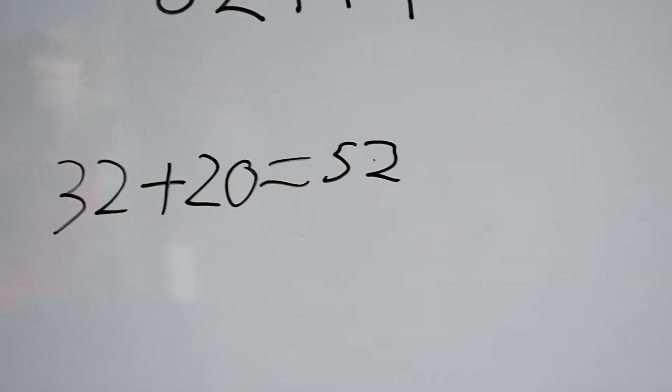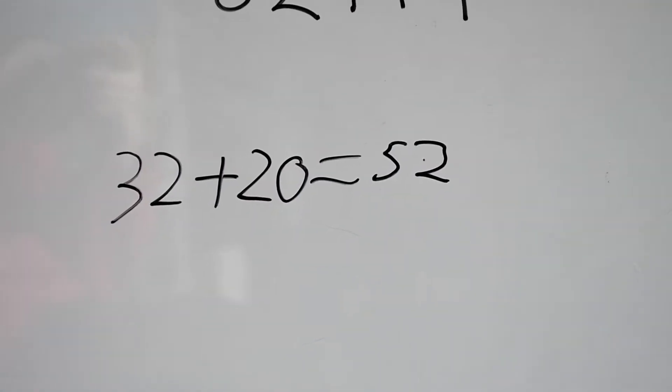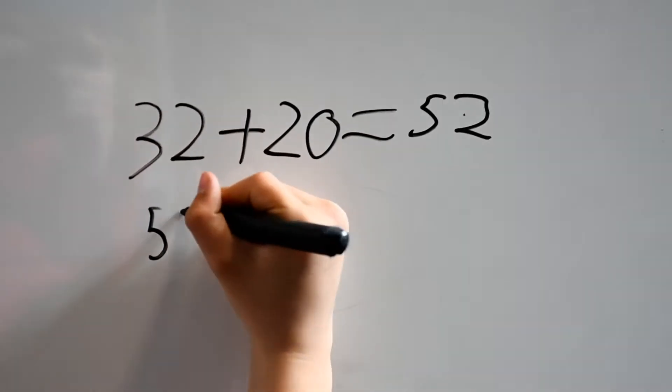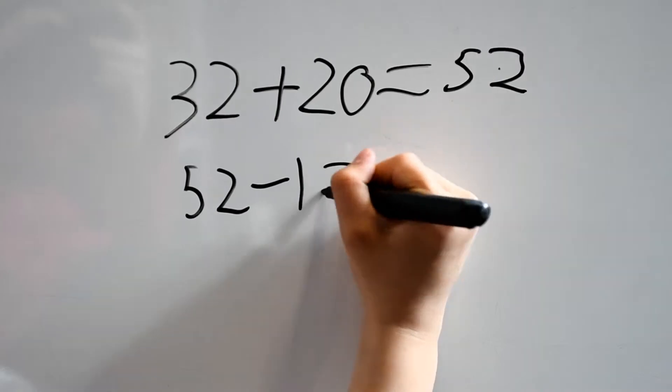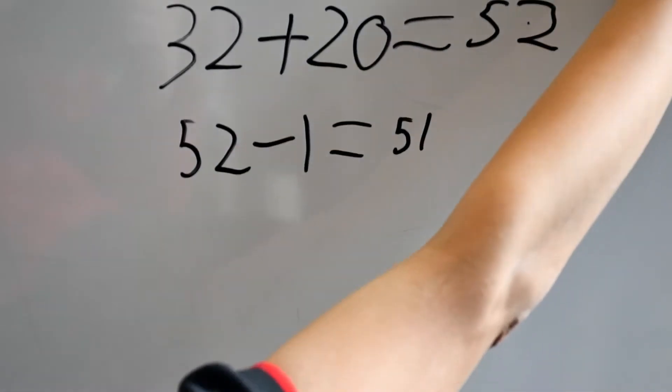We do 20 instead of 19 because it's easier to add 20 rather than 19 to 32. Then we have 52 and we need to minus the one that we added earlier, which equals 51. Therefore our answer is 51.